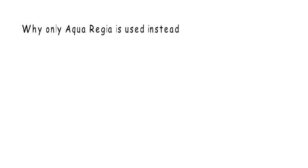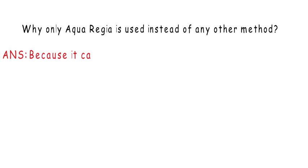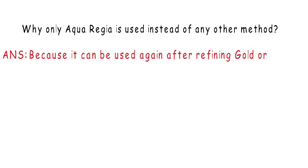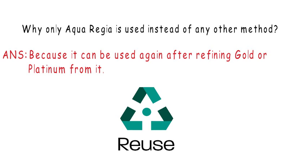Why do we use aqua regia instead of using any other method or chemical? Because aqua regia can be reused after refining the dissolved gold or platinum from it. We have learnt a lot about aqua regia.